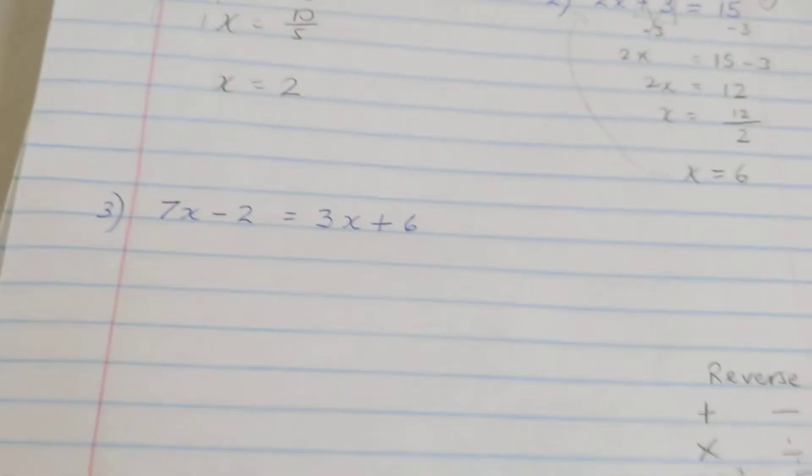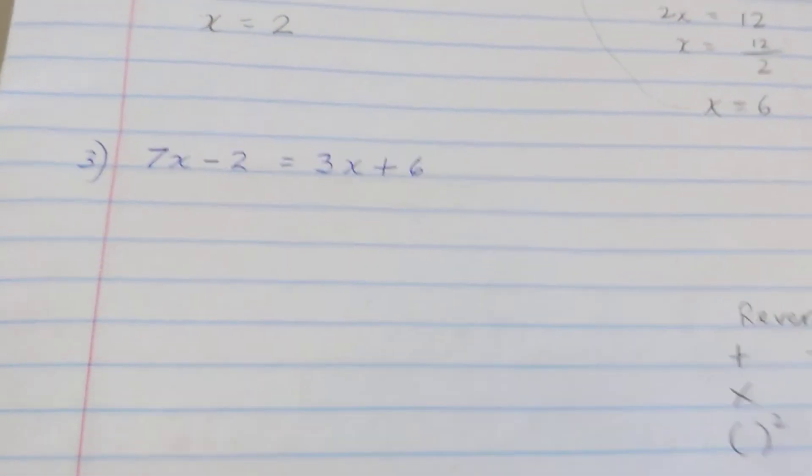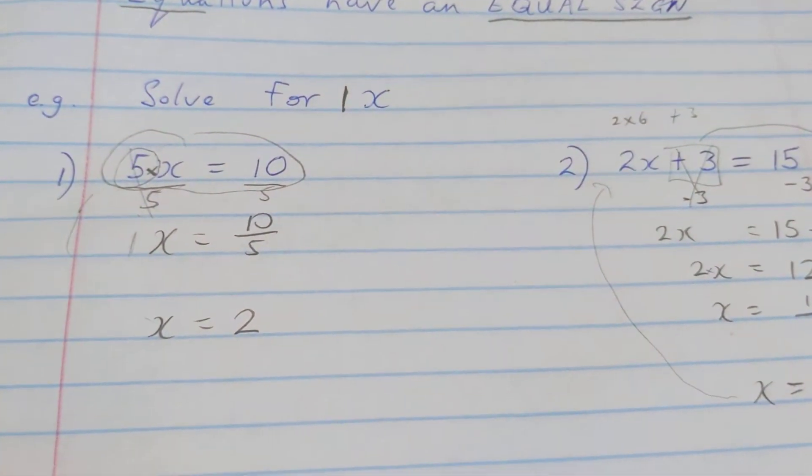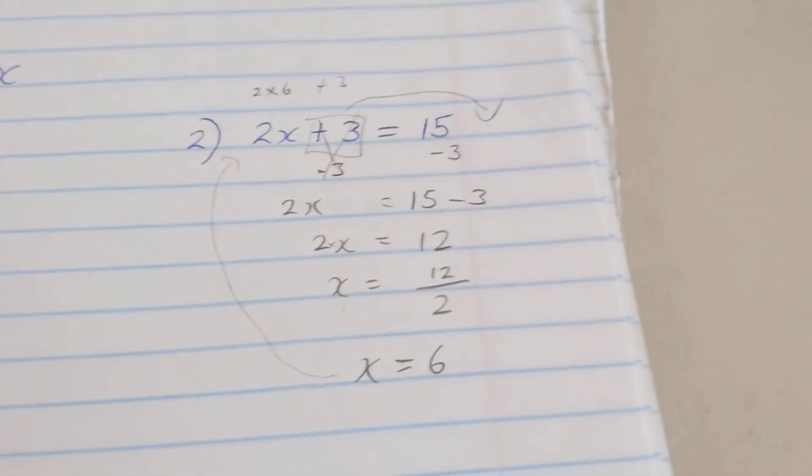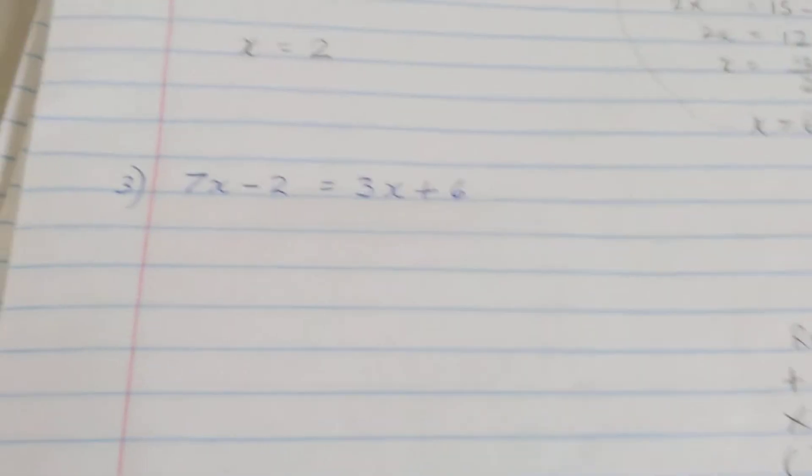Now for a harder version of solving equations. You realize I get progressively harder. Now we have both letters and numbers on one side, and now we have both letters and numbers on both sides.